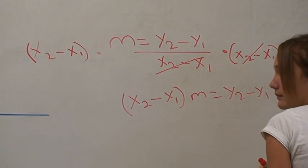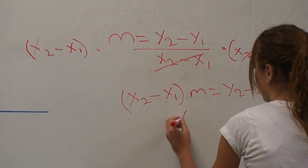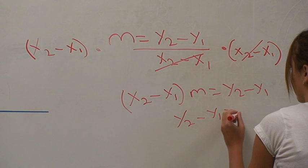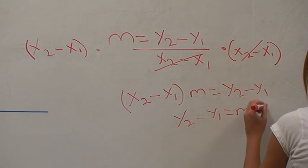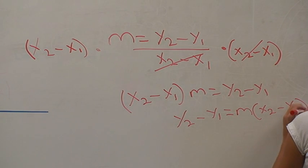And now we want to switch the sides: y2 minus y1 equals m times x2 minus x1. The m can switch because multiplication is commutative. It can be moved around.